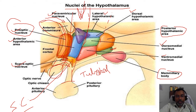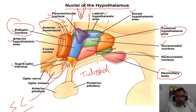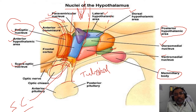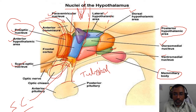In this region, the other nuclei are the anterior hypothalamic nucleus and the paraventricular nucleus. The paraventricular nucleus and the supraoptic nucleus together are basically important for the secretion of posterior pituitary hormones.